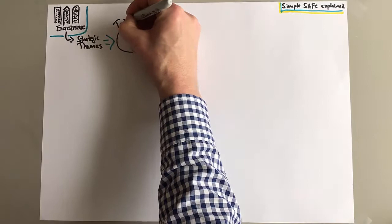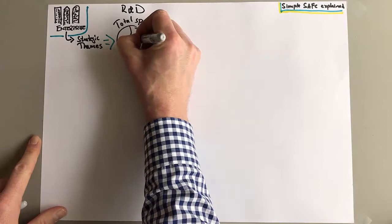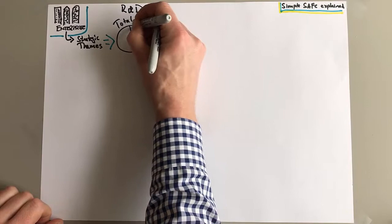And based on these strategic themes, you have a total spend - how much you're going to spend on R&D or product development or whatever you call it. Now when you allocate that spend, we're up on the portfolio level now, you would want to not start off and allocate it to different projects.